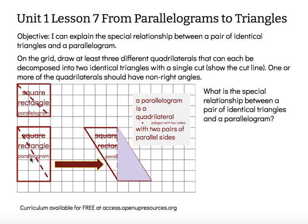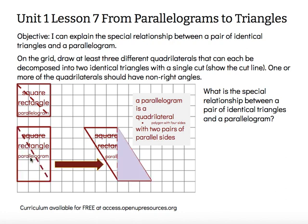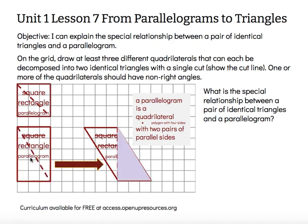That's how we figured out how to find the area of a parallelogram — we decomposed and rearranged to make it into a rectangle, and we already knew how to work with rectangles. The purpose of today is to recognize the relationship between the triangles that make up the parallelogram. Just like a parallelogram can be decomposed and rearranged into a rectangle, we can also consider the number of triangles inside a parallelogram. The question that rewords our objective is: what is the special relationship between a pair of identical triangles and a parallelogram?